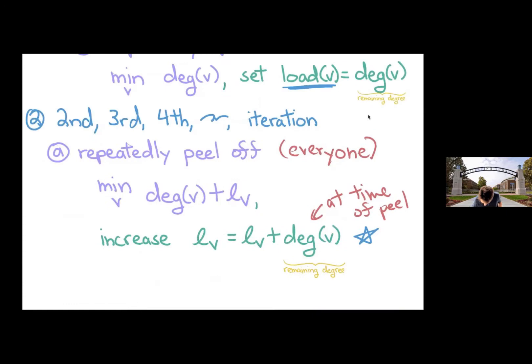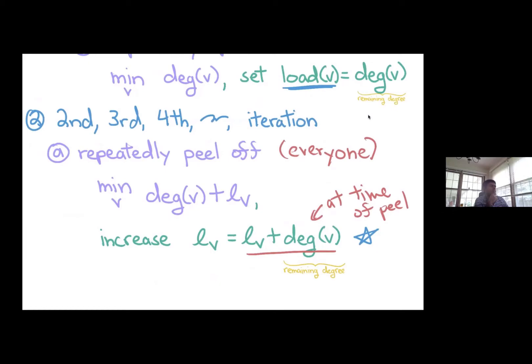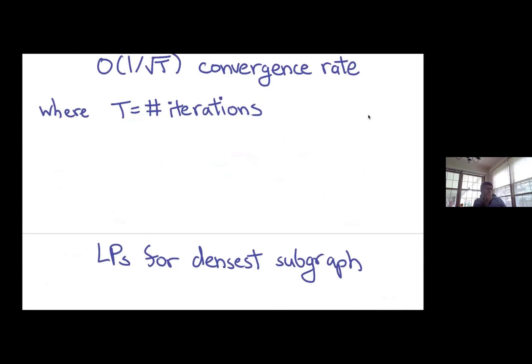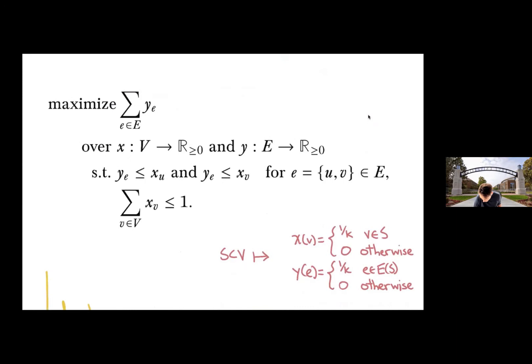So let's start talking about some LPs. Here's maybe a natural LP directly relaxing the densest subgraph problem. So we have variables for both vertices and edges. The vertex weights are constrained to be at most one. And the edges are bounded above by the endpoint. So if I have an edge E between U and V, the weight of the edge has to be at most the weight assigned to the vertex. So I want to maximize ultimately the sum of edges.